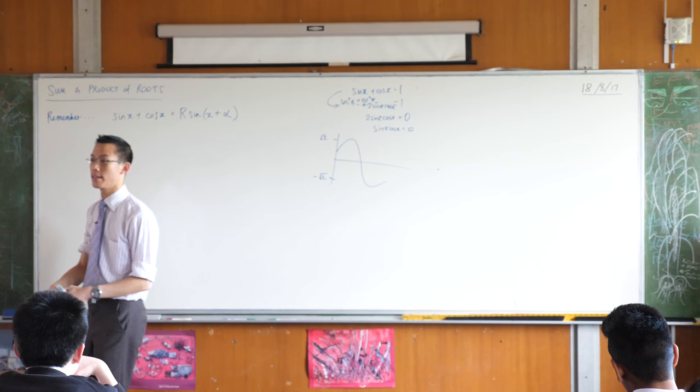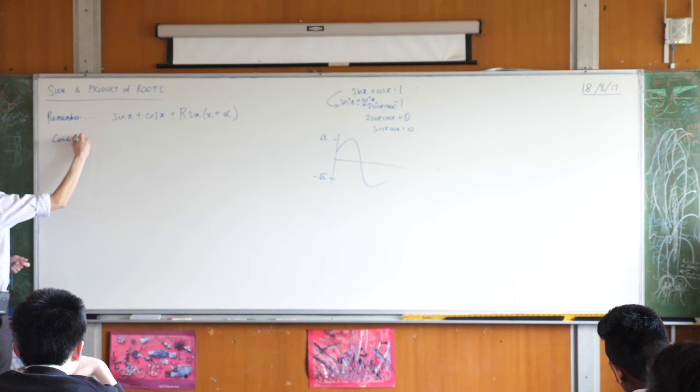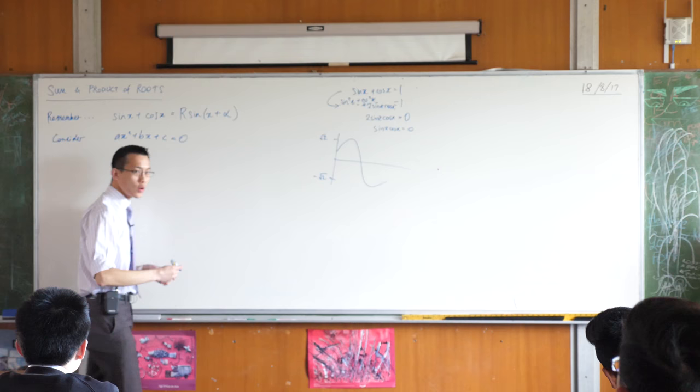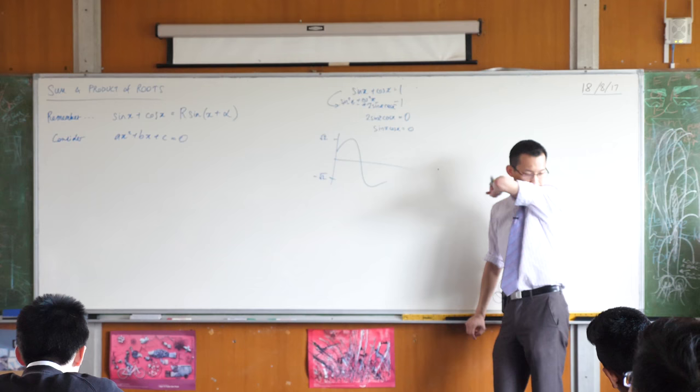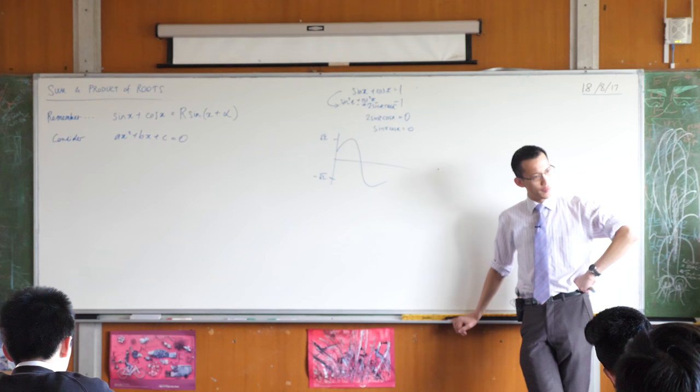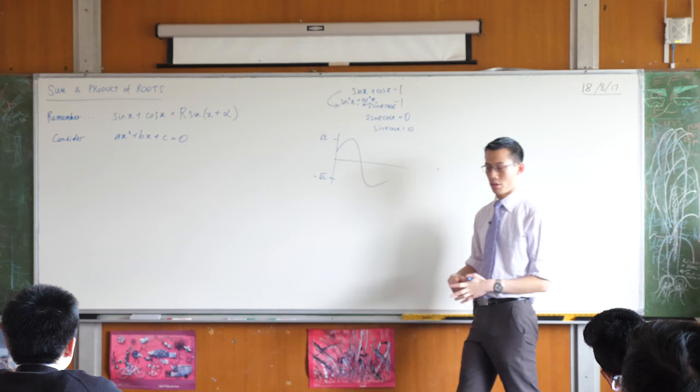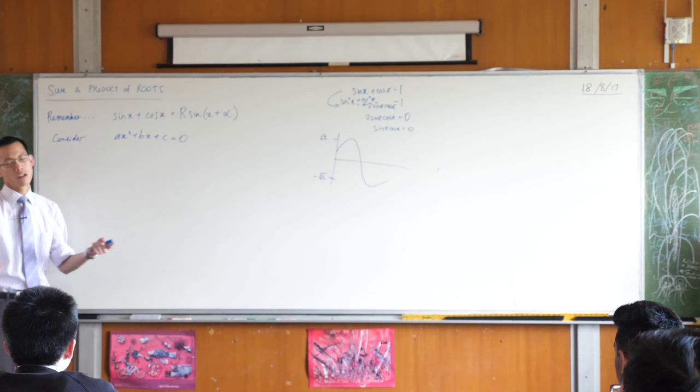So underneath this, I want you to consider this quadratic here, which of course could be any quadratic given different values of a, b, and c. Now, general form, as we've discussed before, is not particularly revealing. It doesn't show you very much about the structure or the shape of the parabola. You've got to muck with it in order to do that. For example, if you wanted to find out what the vertex was, what might be the simplest way to do it? There's lots of ways, but give me one.